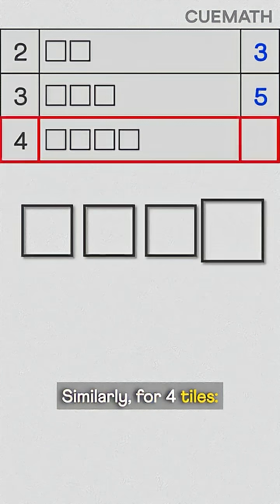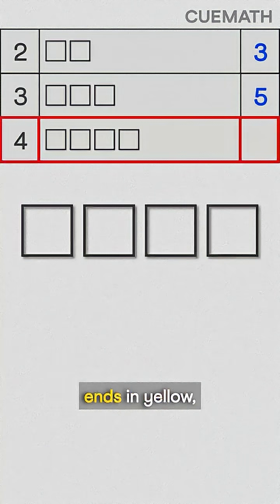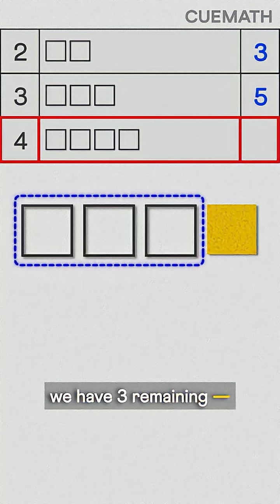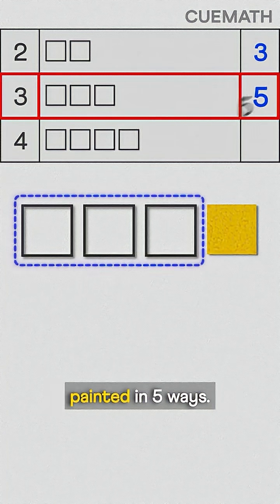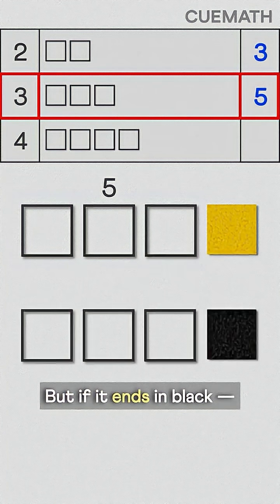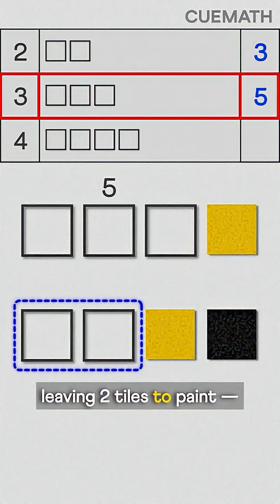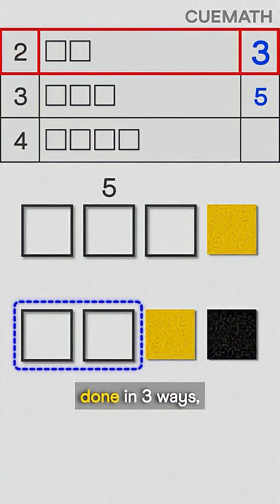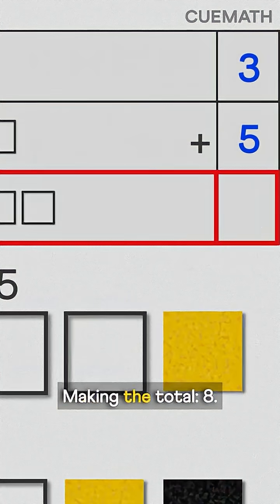Similarly, for four tiles, if the fourth tile ends in yellow, we have three remaining, which we found can be painted in five ways. But if it ends in black, the second last must be yellow, leaving two tiles to paint, which can be done in three ways, making the total eight.